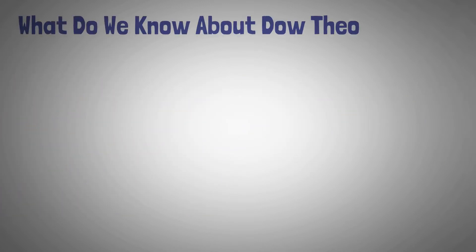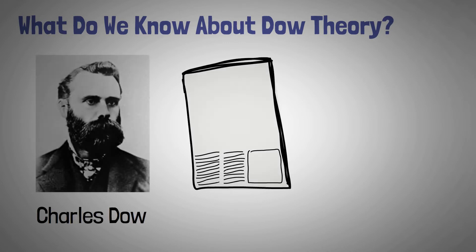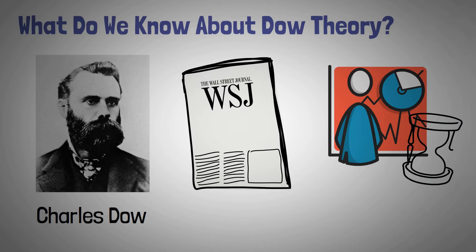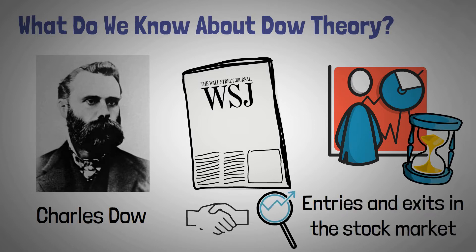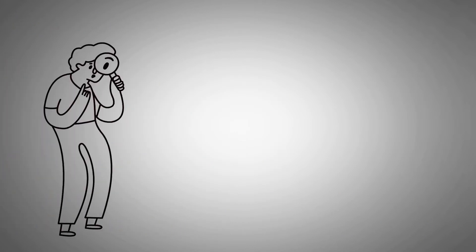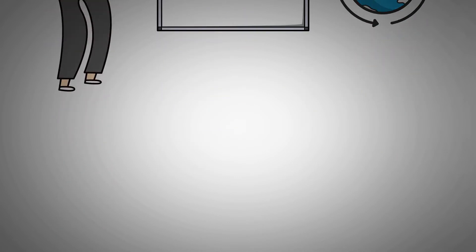What do we know about Dow theory? Charles Dow put Dow theory forward, and his observations were recorded in the Wall Street Journal around 150 years ago. The Dow theory is a phenomenon that times entries and exits in the stock market by analyzing the price trends and trading volumes. As history repeats itself, it is easier to predict market behavior as traders act the same way with similar information present in the world.